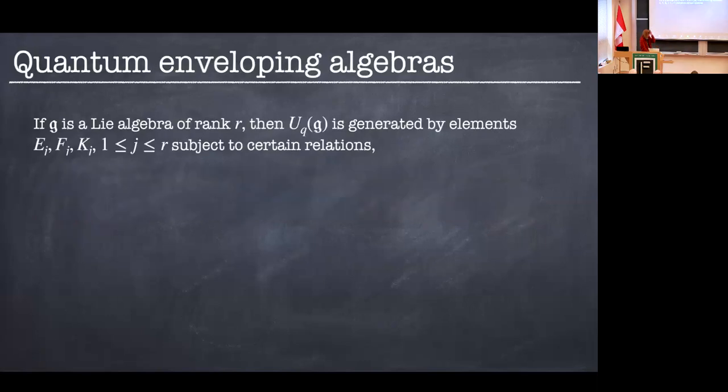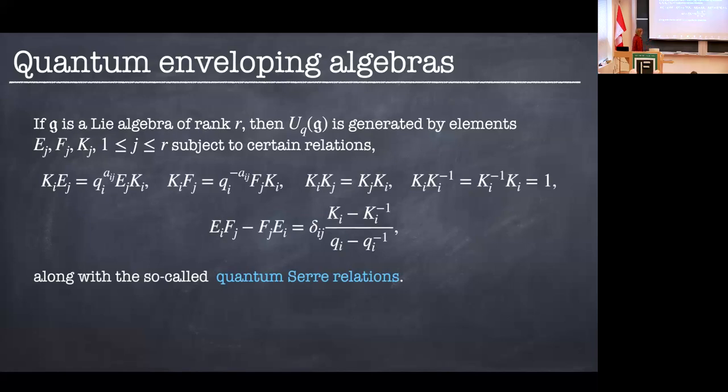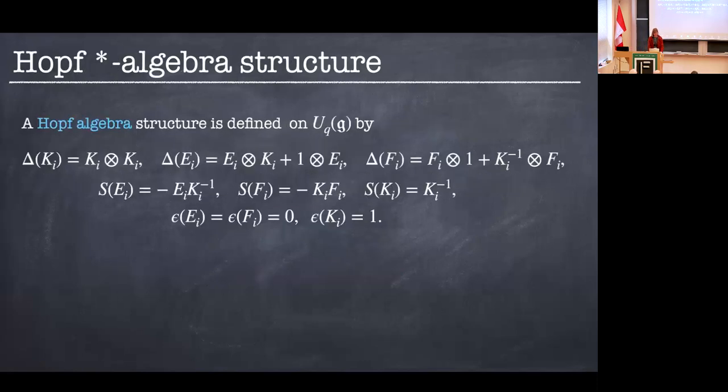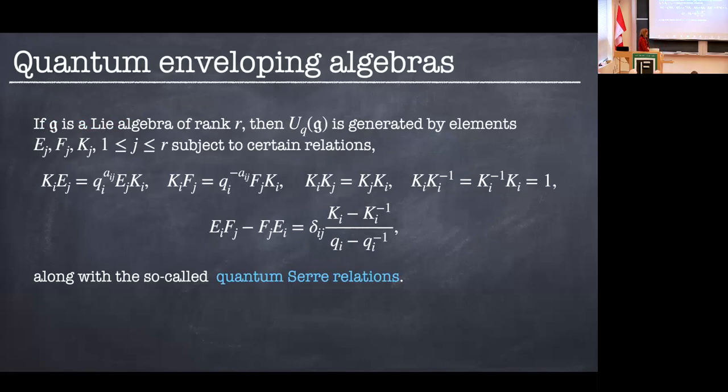So Lie groups, compact, semi-simple Lie groups, simply connected, compact, semi-simple Lie groups, admit a particularly satisfying q deformation via their enveloping algebra of the associated complex semi-simple Lie algebras. So how does one do this? Take your complex semi-simple Lie algebra g, and its enveloping algebra U(g). One can q deform this in the same sort of sense I was talking about earlier. And this q deformation, you can do it in such a way that one retains the Hopf star algebra structure, and one has the same representation theory as U(g). So how does one do this? Take a Lie algebra of rank r, then U_q(g) is generated by elements E_i, F_i, and K_i. Subject to these relations here. And okay, I don't necessarily expect you to take these in if these are the first time you've ever seen this, but if you're familiar with quantum enveloping algebras, then you can see that these look very familiar. [Discussion of Cartan matrix] This is a Cartan matrix.